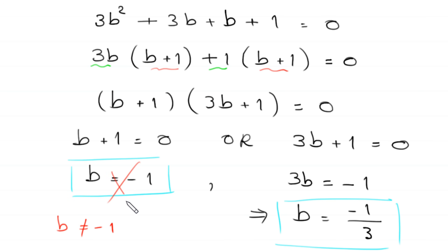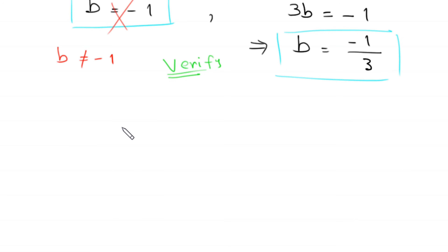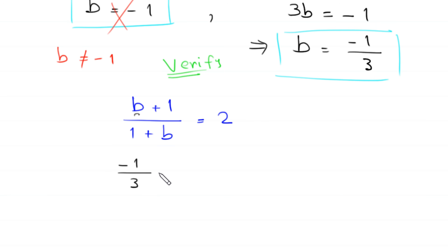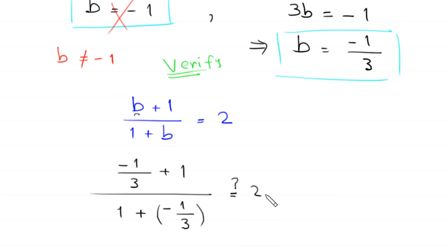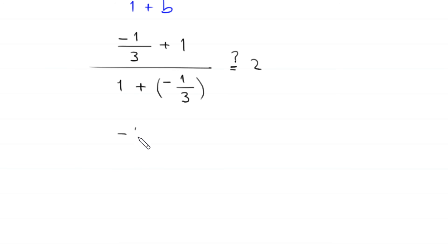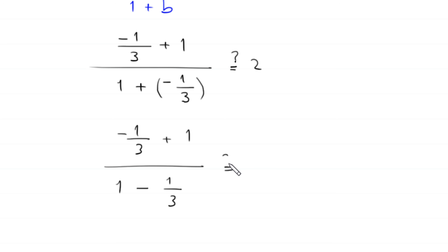Now we verify the value b equals negative 1 over 3 to see if it is a solution. The original equation is b plus 1 divided by 1 plus b equals 2. Replacing b with negative 1 over 3, this becomes negative 1 over 3 plus 1, divided by 1 plus negative 1 over 3, and we check if this equals 2.